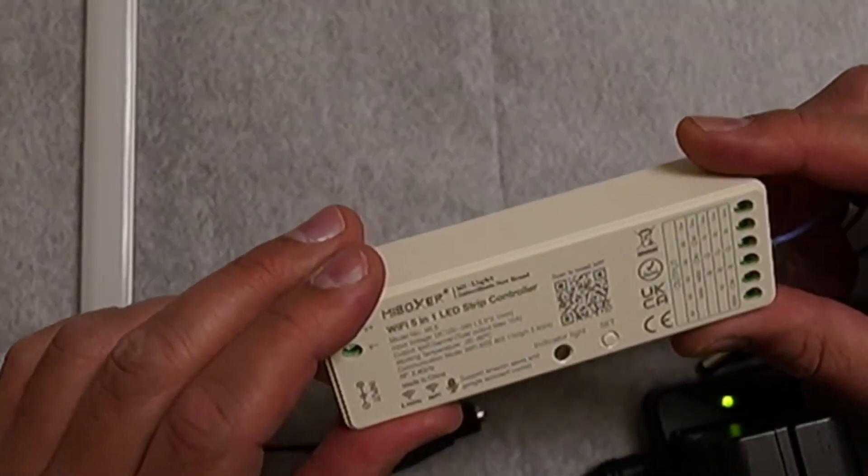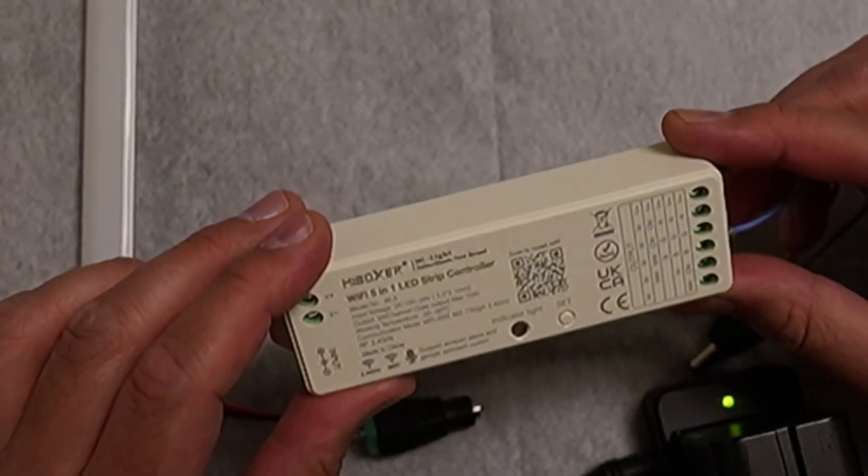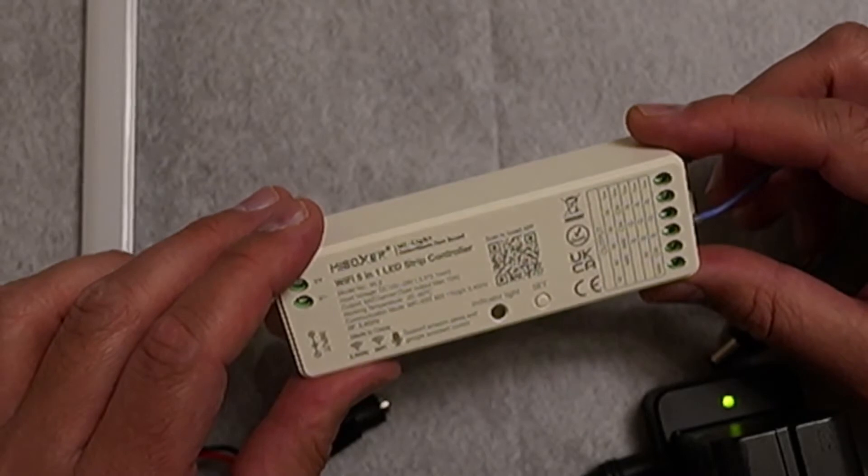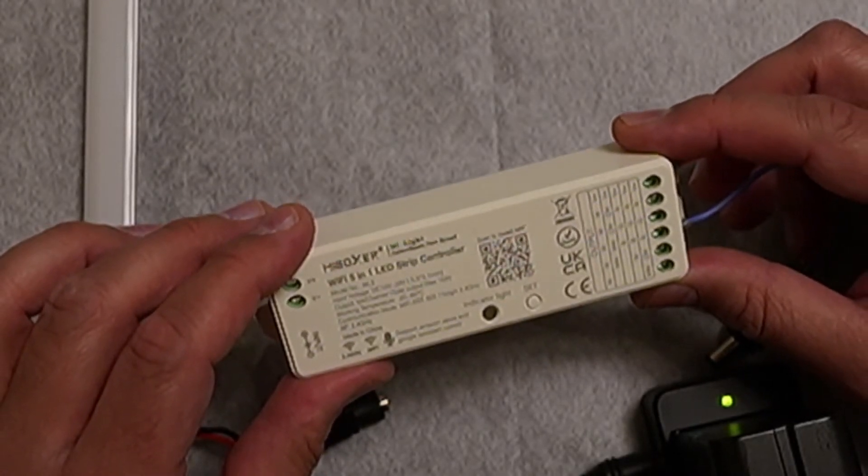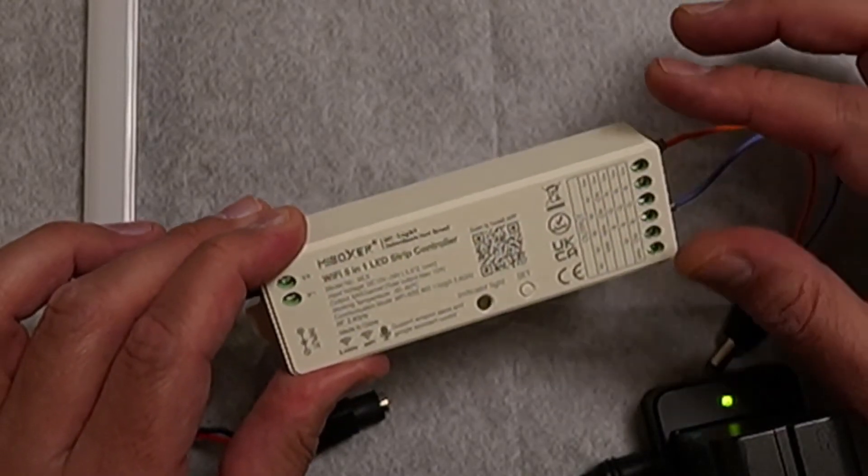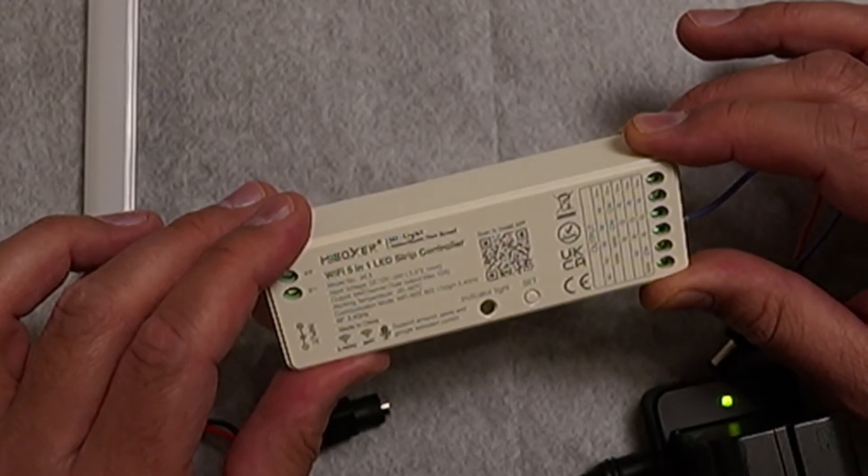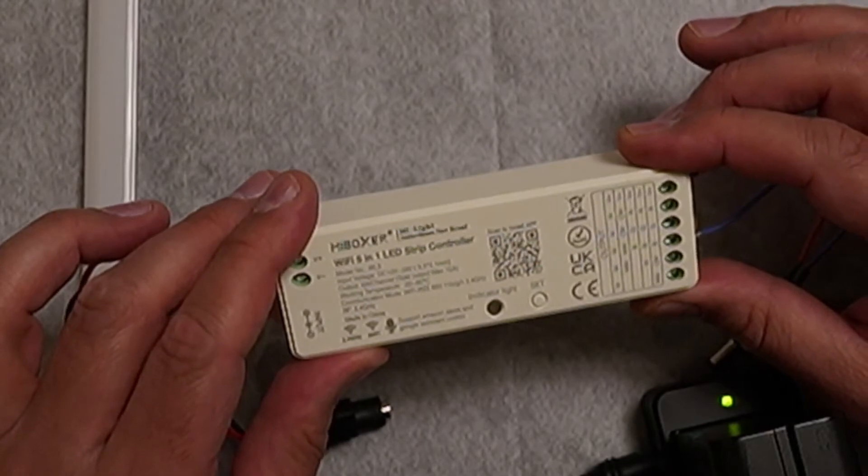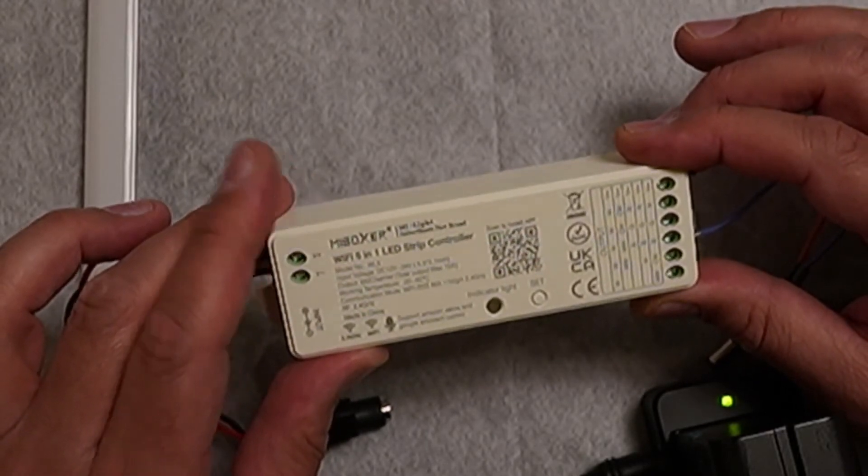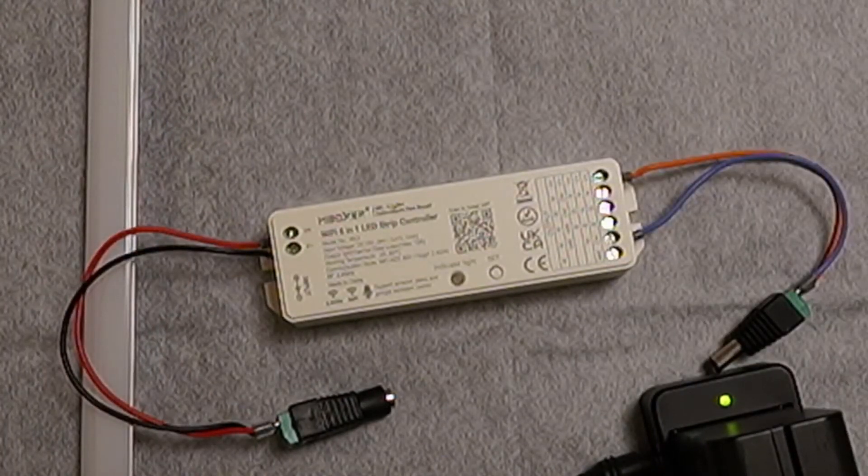So this MiLite WiFi 5-in-1 LED strip controller is one of the best. It connects with WiFi, allows you to control with Alexa and all that. And one thing interesting is that this particular product is controlled with not only MiBoxer app which is by default supported, it's also supported by Smart Life, and that's the good part. So you can control this with both, plus there are some interesting controllers available which we'll be looking into.